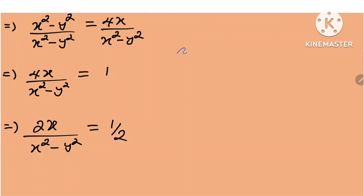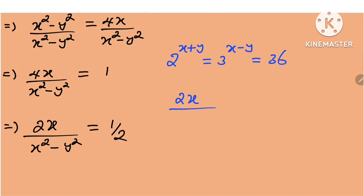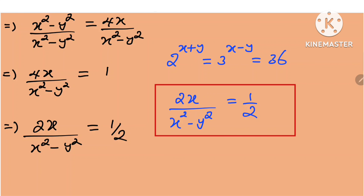So we are saying that if 2 raised to the power x plus y is equal to 3 raised to the power x minus y, which is equal to 36, then 2x divided by x squared minus y squared is equal to one half. Thanks for watching.